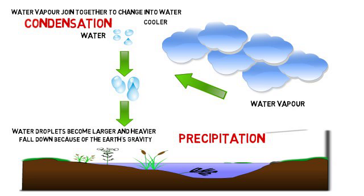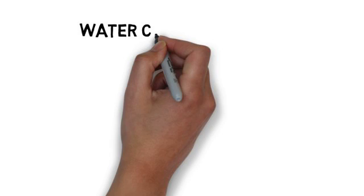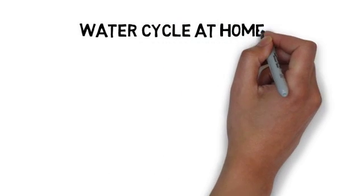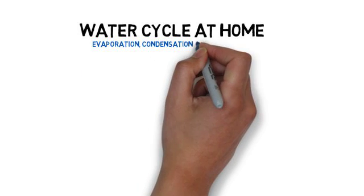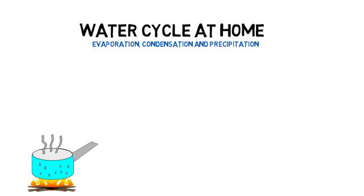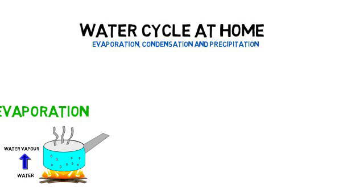This completes the water cycle. Now let's take a simple example at home which covers all three phases of the water cycle: evaporation, condensation, and precipitation. Take a bowl of water and heat it up. Water will slowly turn into water vapor and then move up. This process is called evaporation.